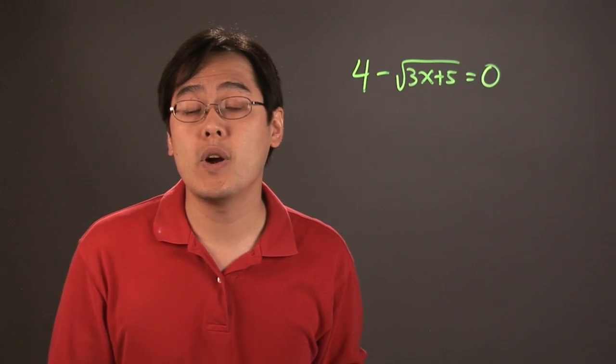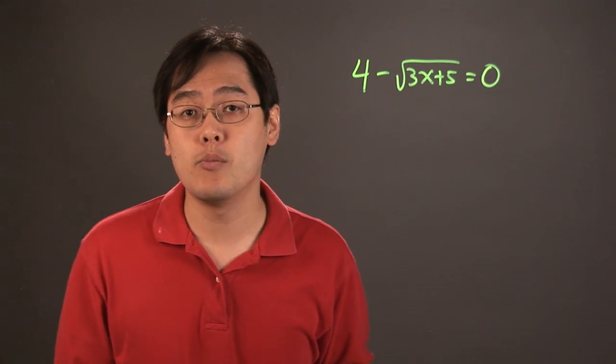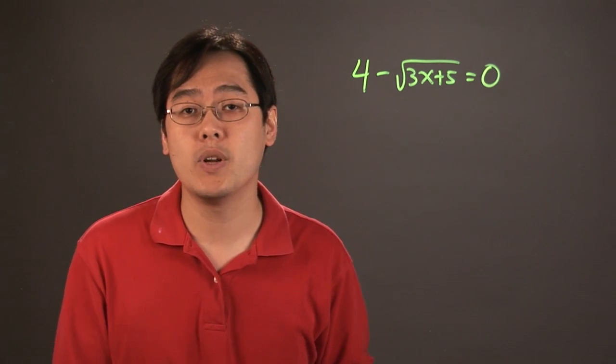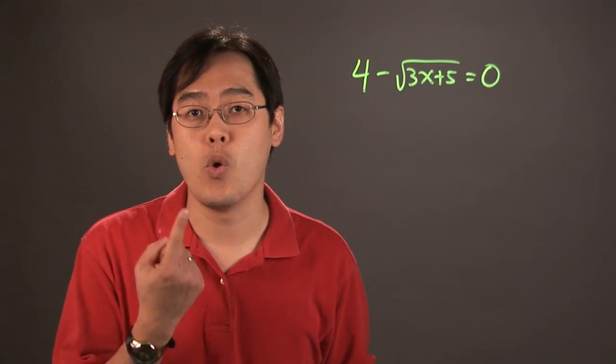Even if you have two radicals, you want to get one of the radicals by itself. The less radicals you have on one side, the better. And you always want to solve each radical equation one radical at a time.